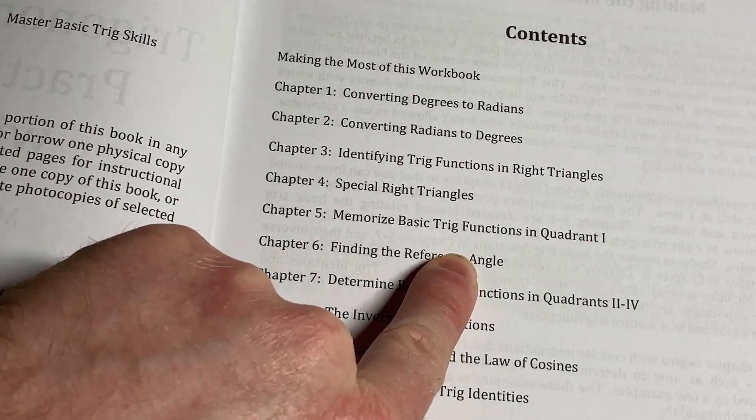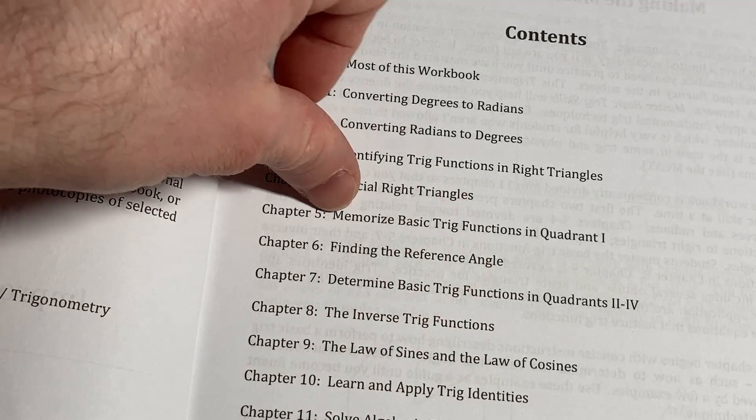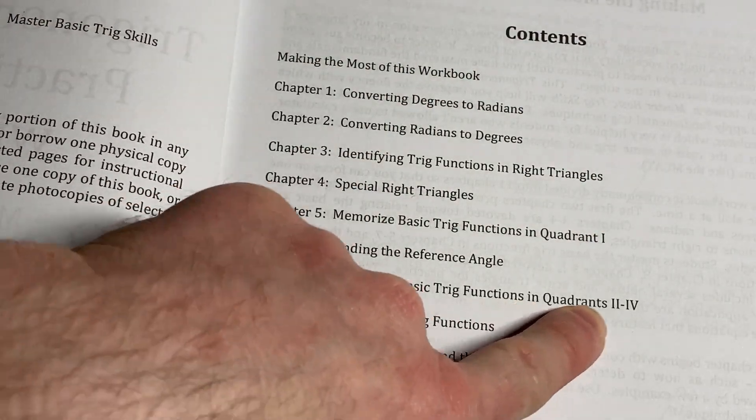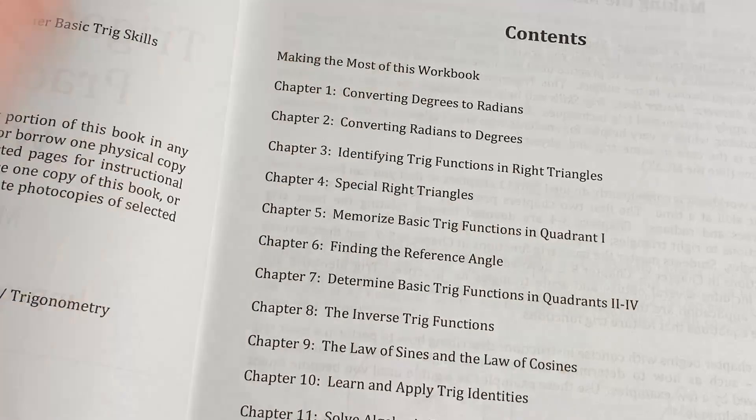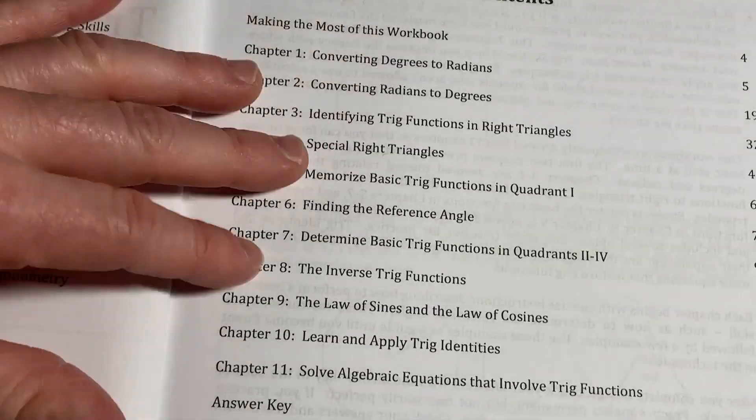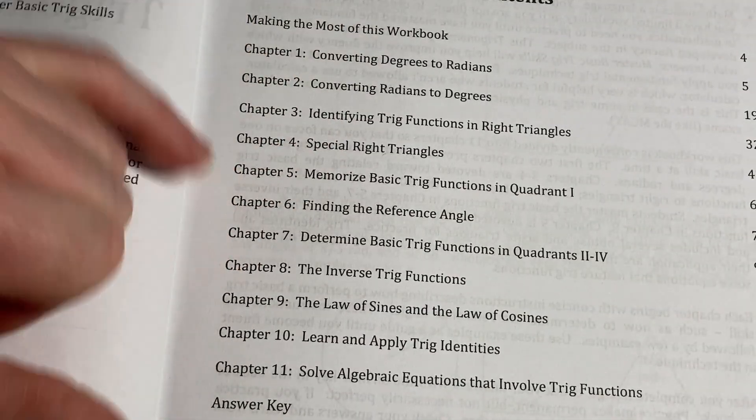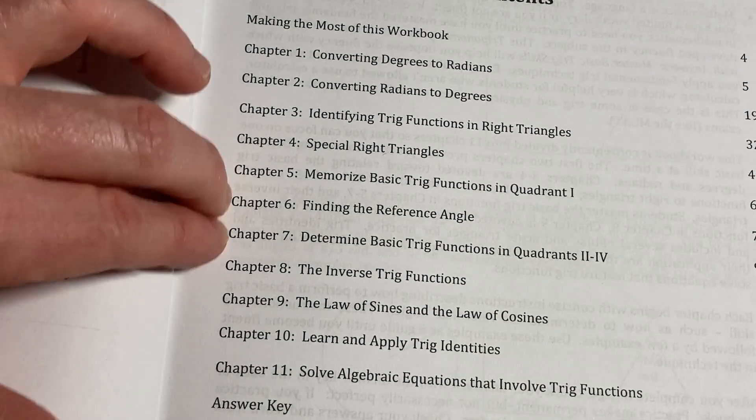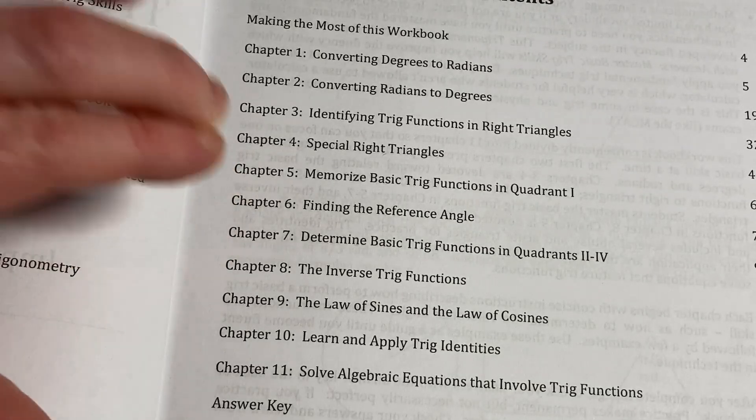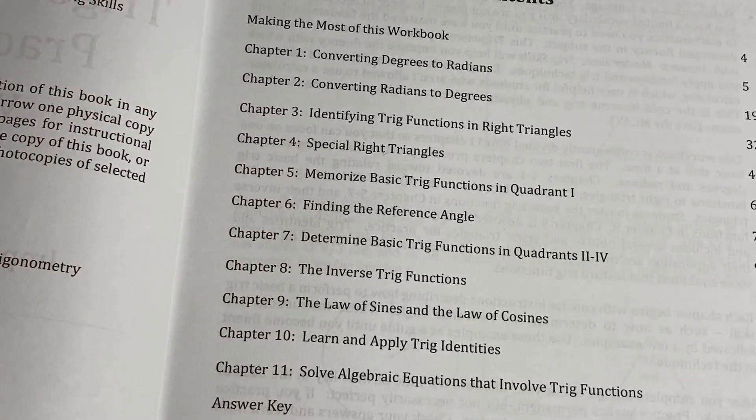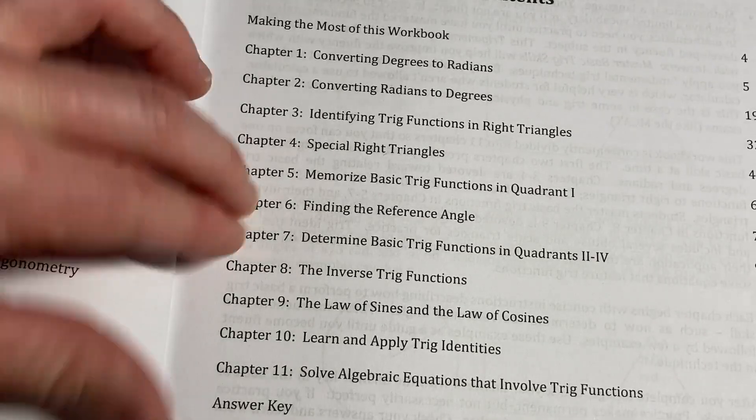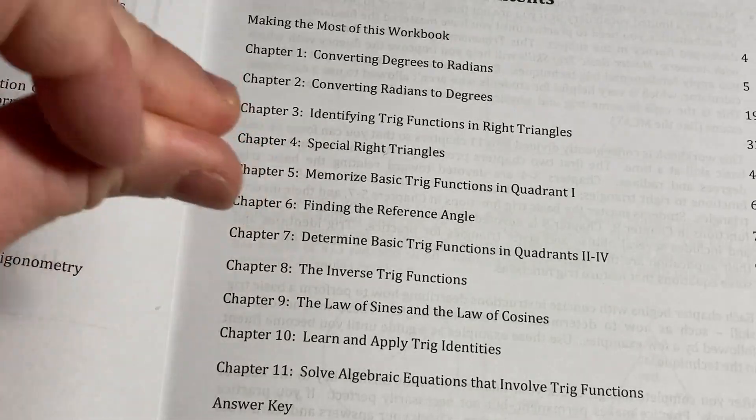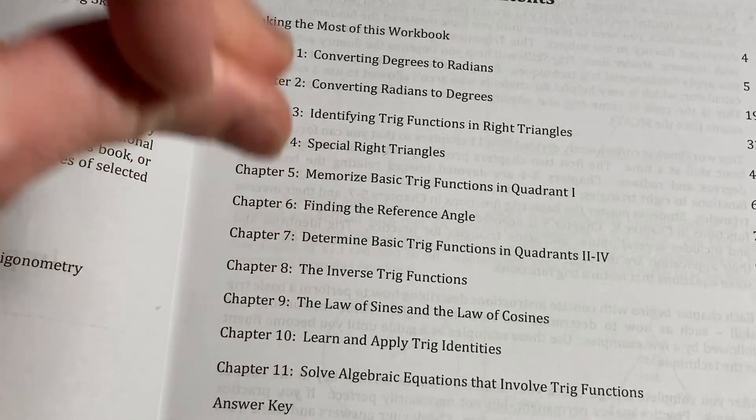And then finding the reference angle, and then you use the reference angle and your memorization to determine basic trig functions in quadrants 2 through 4 using a property of trig function values. So this is super, super key. This is probably the hardest thing in all of trigonometry. If you get really good at this, you're probably going to be okay for the rest of trig and calculus and everything else. Like, this is something that you need to know and need to get good at. So Chris does an excellent job here. It's worth buying just for this alone.